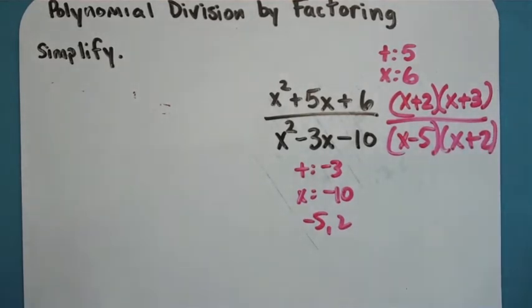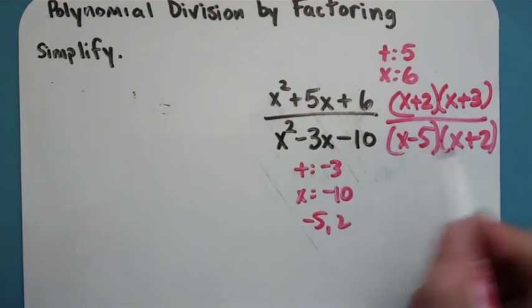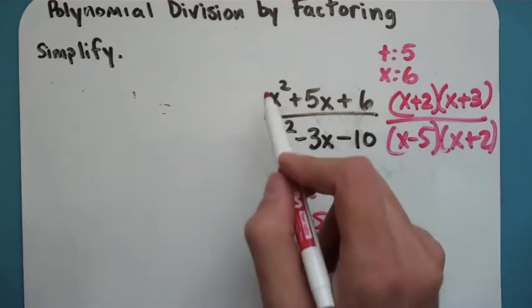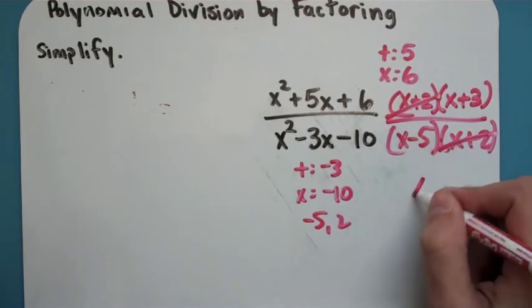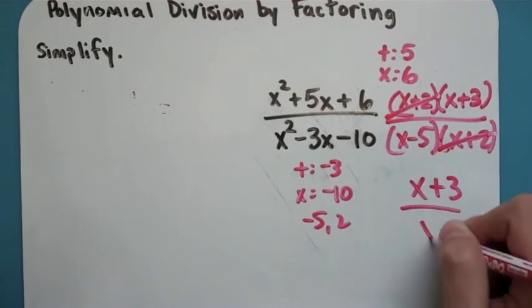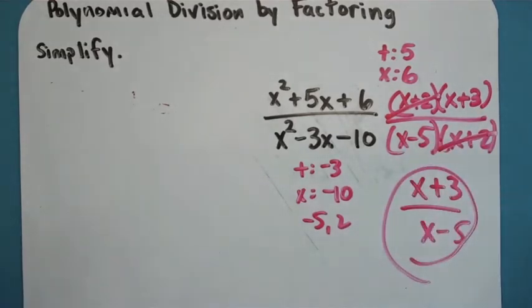Now you'll notice that on these problems here, I have an x plus 2 on the top and on the bottom. Those are okay to cancel because I'm canceling out multiplication here. I'm not taking a plus or minus sign and slashing. I'm just going to slash those two out. I get x plus 3 over x minus 5 and that's my final answer. I can't cancel out the x's or go any farther with it.